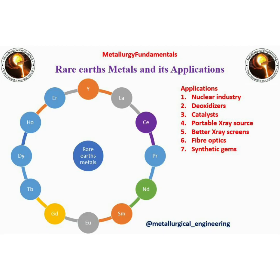Rare earth metals are yttrium, gadolinium, lanthanum, cerium and praseodymium. These metals are used in the nuclear industry, as a deoxidizer, as a catalyst, to make better X-ray sources, and in fiber optics and synthetic gems.